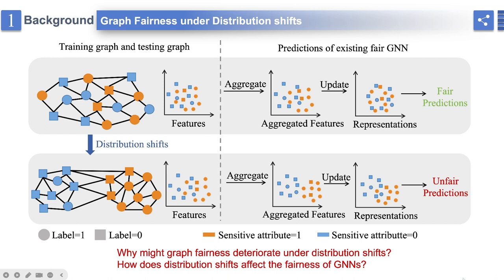Specifically in the testing graph, there are larger feature differences between different sensitive groups, and nodes within the same sensitive group are more likely to be connected. After the feature aggregation step, the aggregated features of nodes will exhibit more bias, resulting in discrimination such as disproportionately recommending low-payment jobs to certain sensitive groups identified by race.